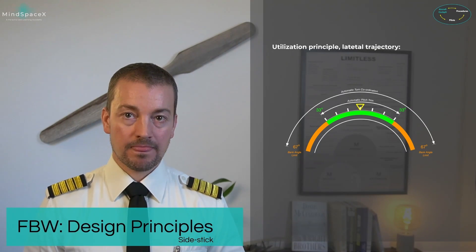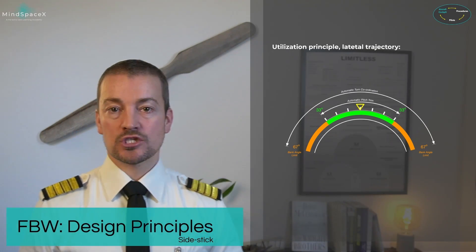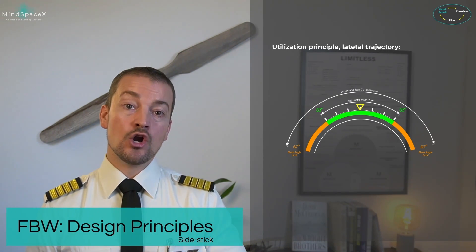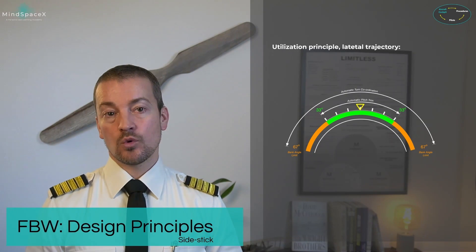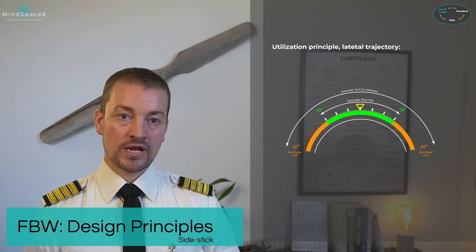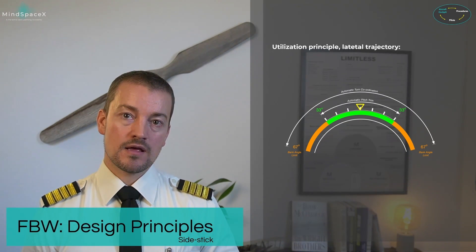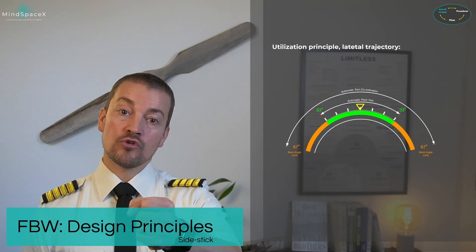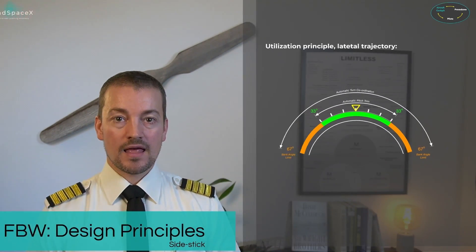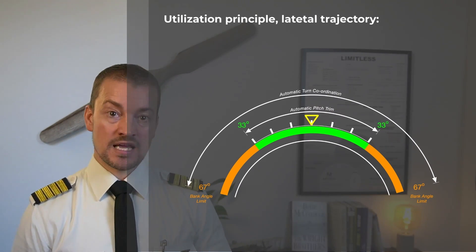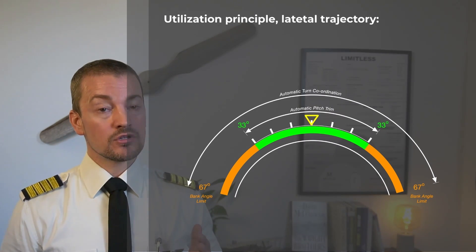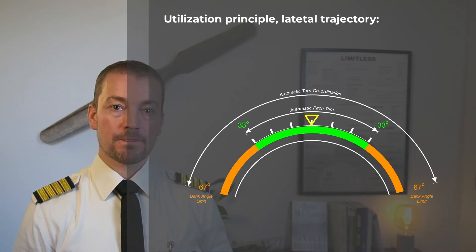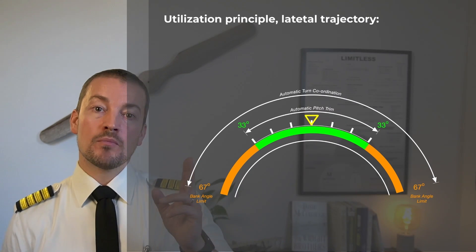The lateral axis uses the same type of principle. However, when rolling the aircraft, we don't ask for a load demand — we ask for a roll rate. The roll rate is how fast the aircraft is rolling. Lateral trajectory is accomplished by moving the side stick left and right. Within the aircraft's limitations, it is not possible to roll more than 67 degrees on either side — that is the bank limit.